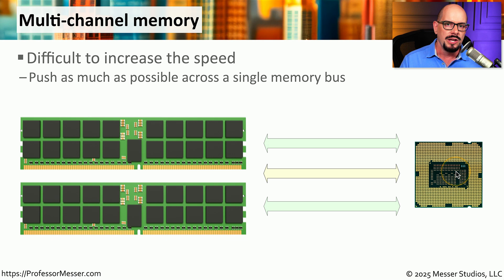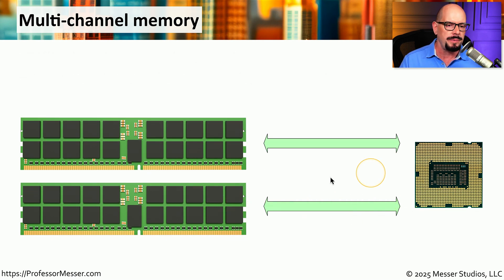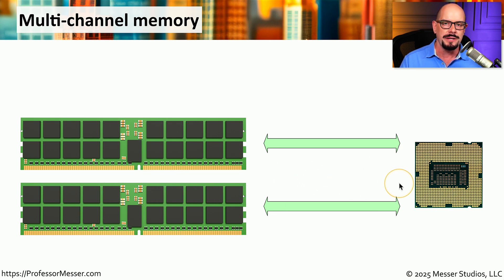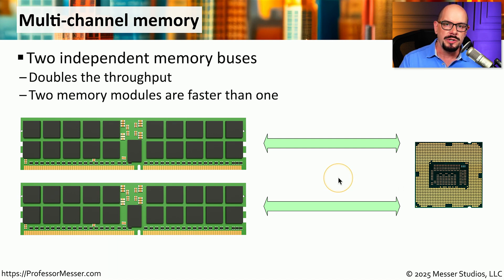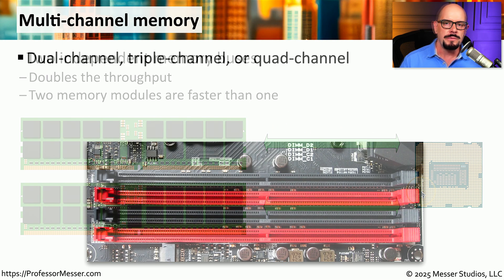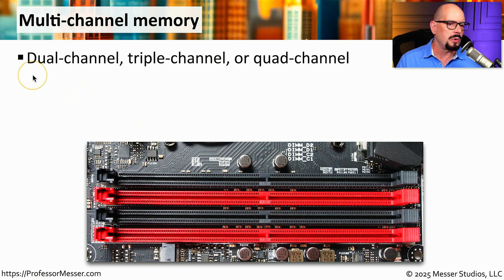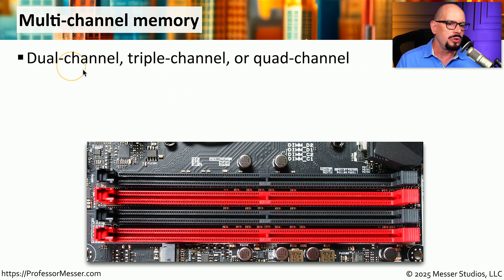In order to increase these throughputs, we might add an additional channel between the CPU and the memory. This allows the CPU to communicate to multiple memory modules simultaneously, thereby increasing the overall throughput of your system. If you were to look at your computer, it may support multi-channel memory, which could potentially double the total throughput between your memory and your CPU.